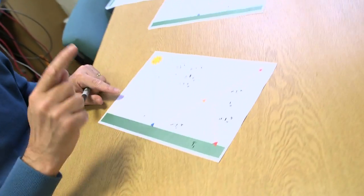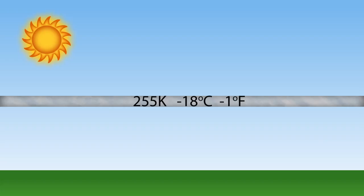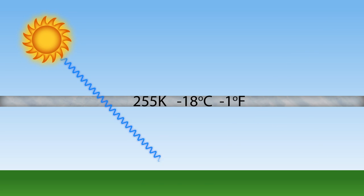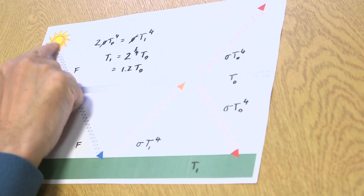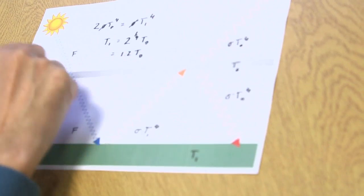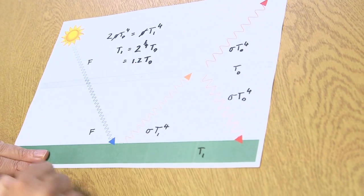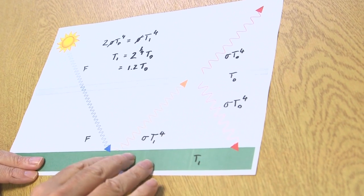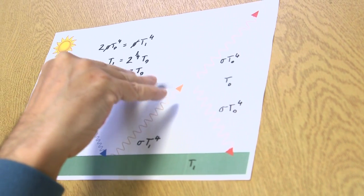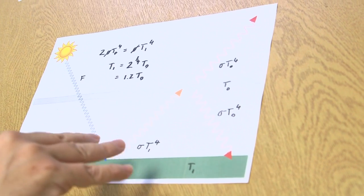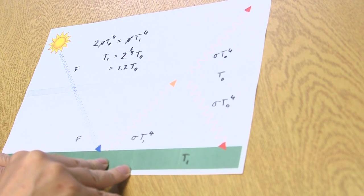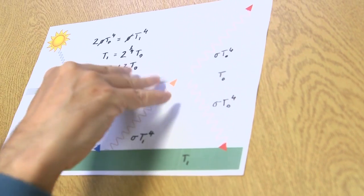What does it capture? It captures the fact that the real balance — if you do the naive calculation you end up with minus 18 degrees centigrade — that balance has to be there. But the important thing is that balance is between the energy coming in and the energy where it's last leaving the Earth: the layer from which the energy actually escapes. That layer ends up at minus 18 degrees. But then in order to get the energy from the ground up to that layer, the second law of thermodynamics essentially says the ground has to be at a higher temperature than that layer. That's why you end up with a higher ground temperature than the naive minus 18 degrees centigrade.